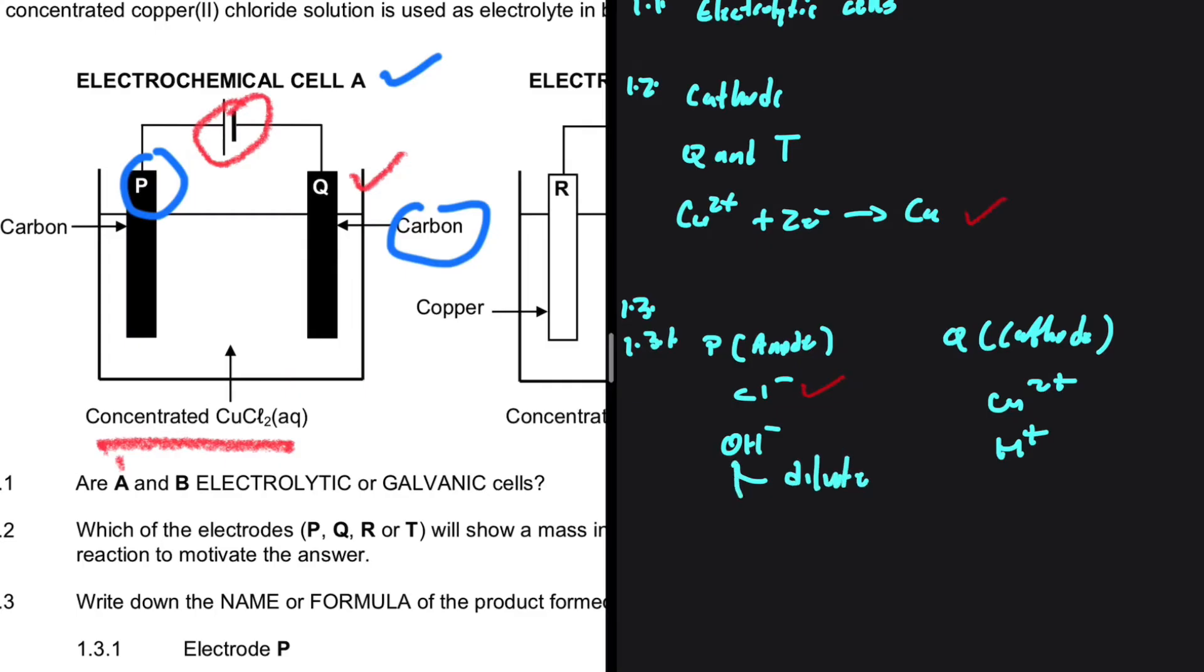And another special case is when we have SO4 2 minus or NO3 minus as the other anion. If this is the case, then OH minus will get oxidized. But if these conditions are not satisfied, then Cl minus or any other anion will get oxidized.